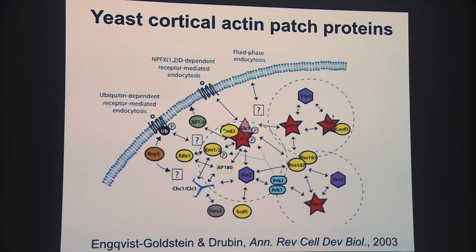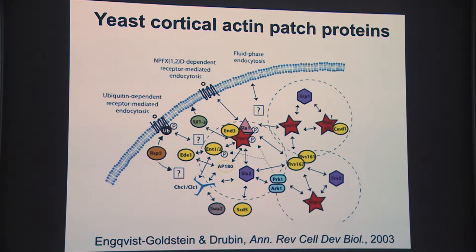We kept running into genes—for example, the END genes that Howard Riezman in Geneva was studying because he was studying endocytosis in yeast cells—but we didn't know exactly what to make of it. Then, around the time GFP and different spectral variants of GFP had been found, it became possible to do live cell two-color imaging. I had a new postdoc named Marco Kaksonen, who was very interested in how these proteins were working together.